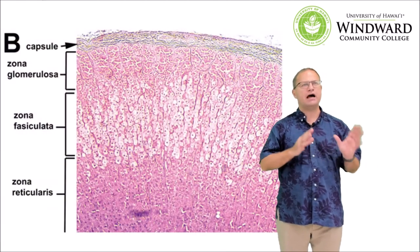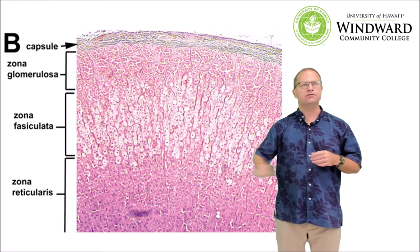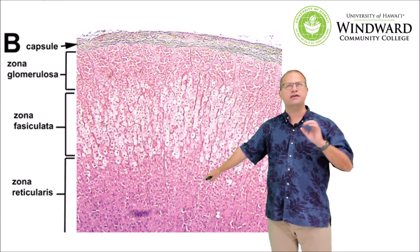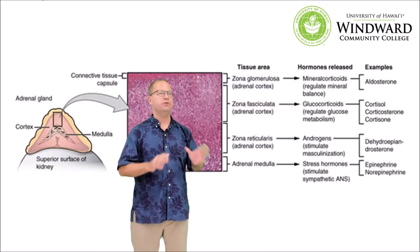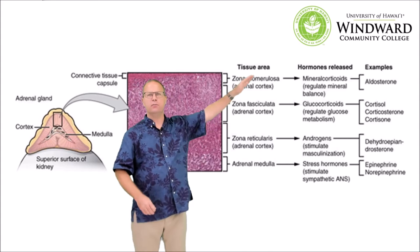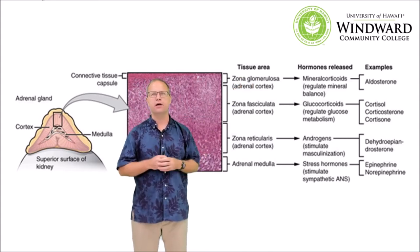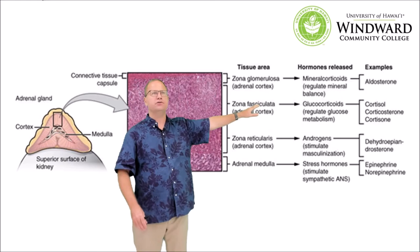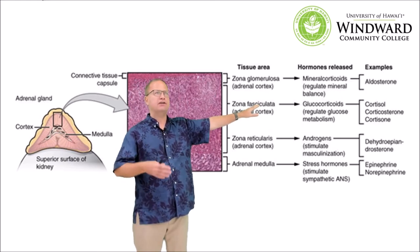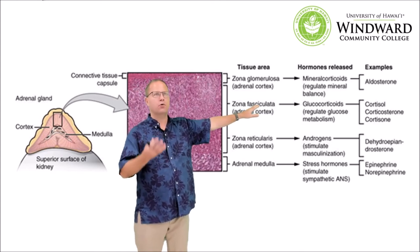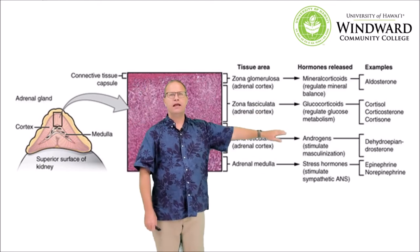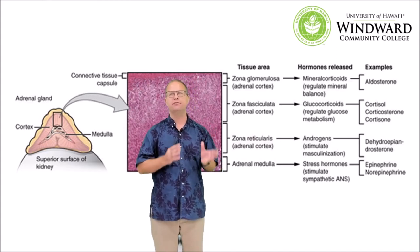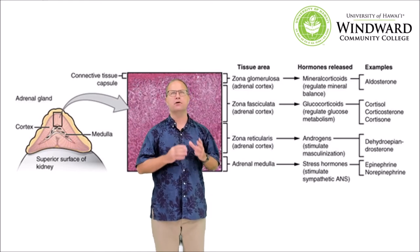Looking at the adrenal cortex more closely, it is divided into three zones: a zona glomerulosa, a zona fasciculata, and a deeper zona reticularis. Each zone is responsible for manufacturing a different hormone. The zona glomerulosa secretes mineralocorticoids such as aldosterone. The zona fasciculata secretes cortisol, which reduces inflammation and suppresses the immune system — drugs like hydrocortisone are derivatives of this corticosteroid hormone. The zona reticularis is important for the production of androgens, which in females help to stimulate libido or sexual response.